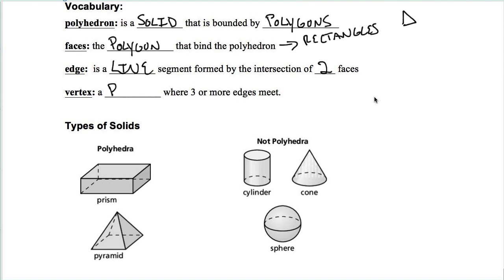The vertex is just a point where three or more edges meet. Again, like the corner of the box of cereal, Rice Krispies, or Cap'n Crunch. What's your favorite cereal? Anyway...